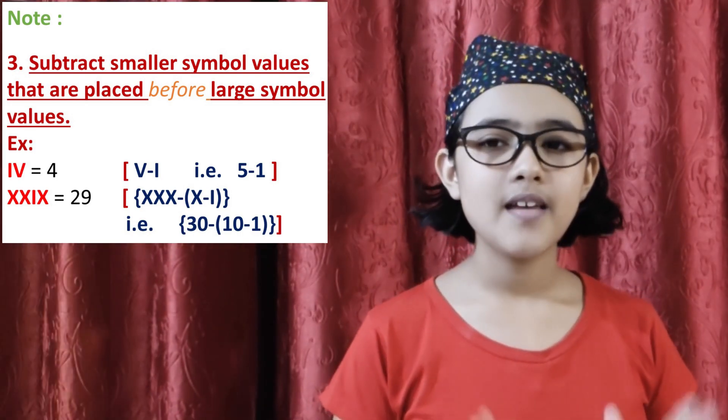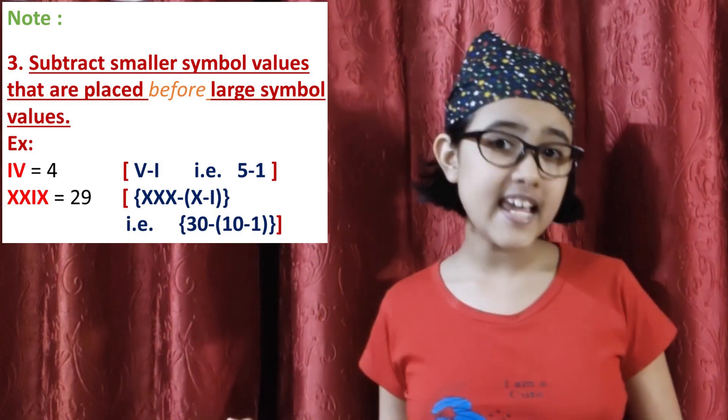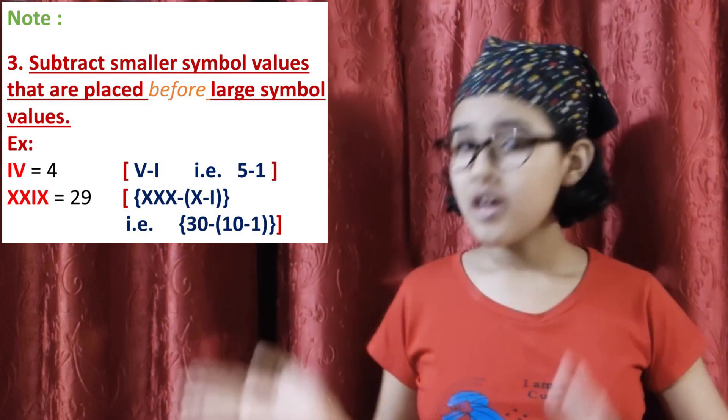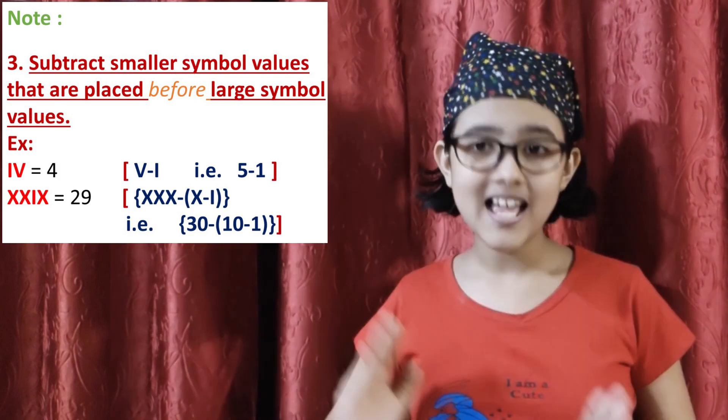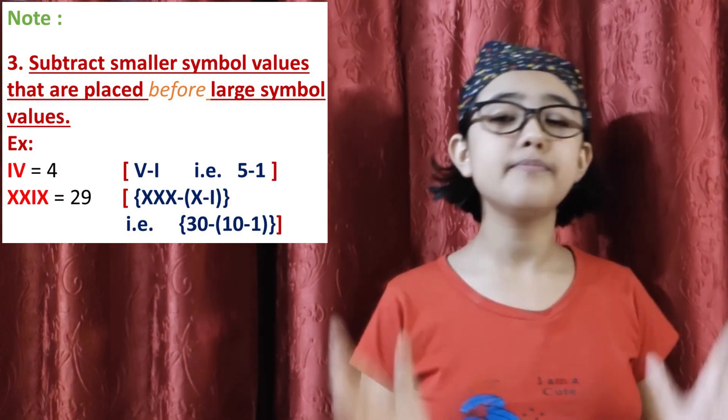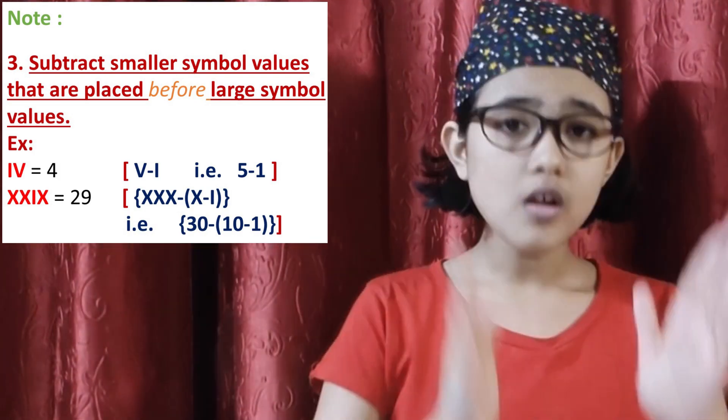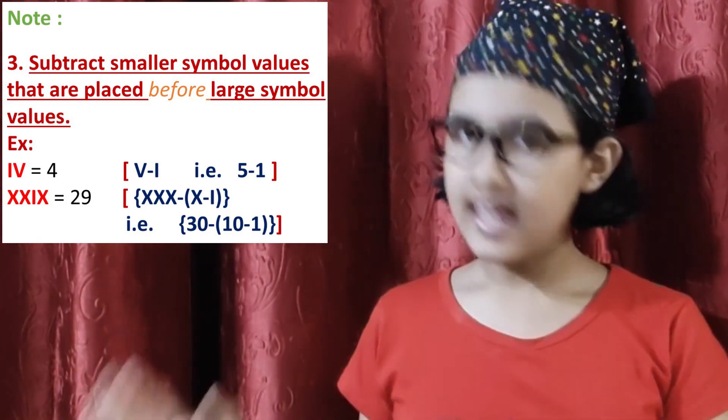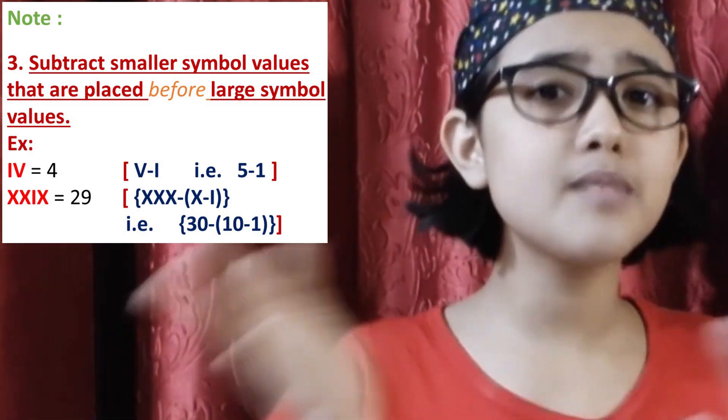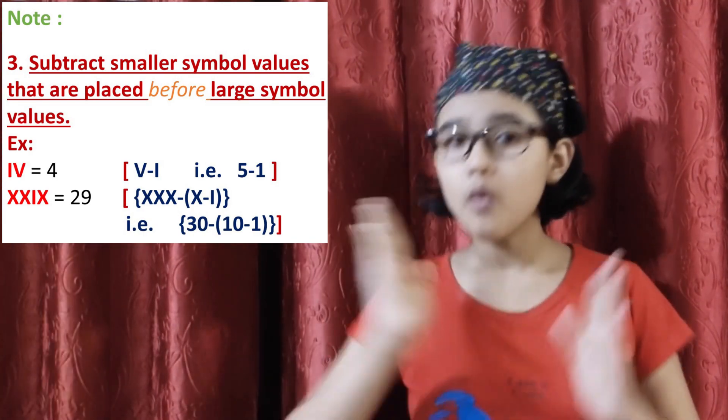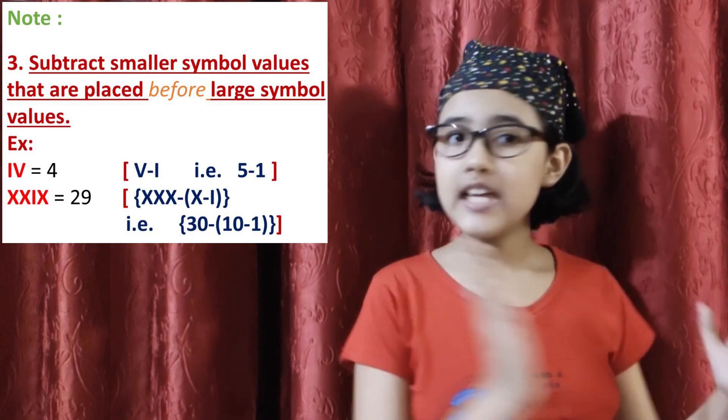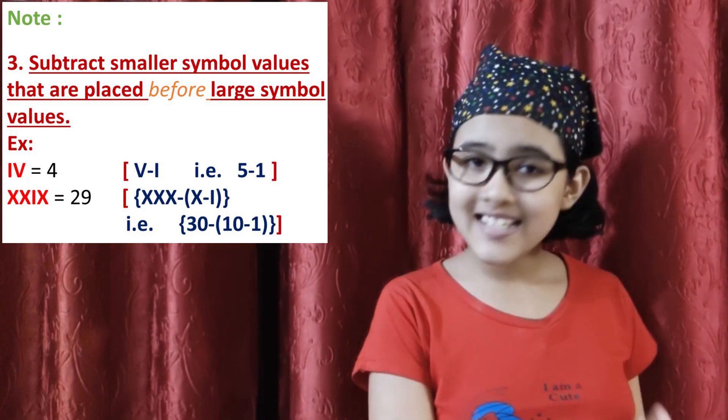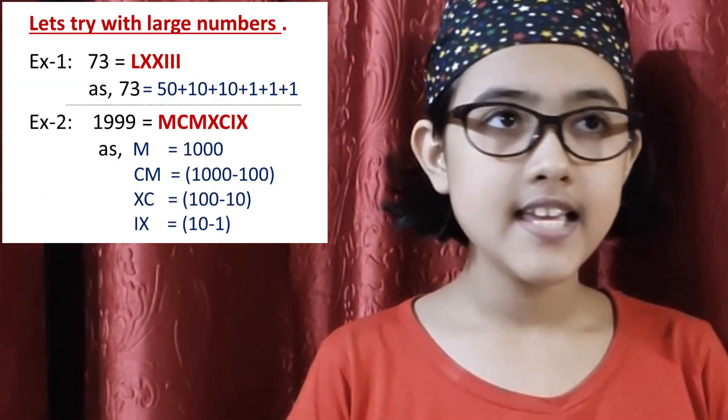5 is V. Now, for 6, we're just adding V plus I, that means 5 plus 1. So VI is 6. In case of 4, it's just being subtracted. In case of 6, we added 1. And in case of 4, we're subtracting 1.